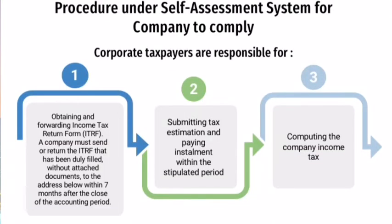The procedures under the self-assessment system for a company to be compliant: the company taxpayer is responsible for obtaining and filing the income tax return form. It should be filled and submitted to the IRB without attached documents. It must be submitted to the IRB within seven months after the close of the accounting period. Second, submitting tax estimation and paying installments within the stipulated period. Third, computing the company's income tax.